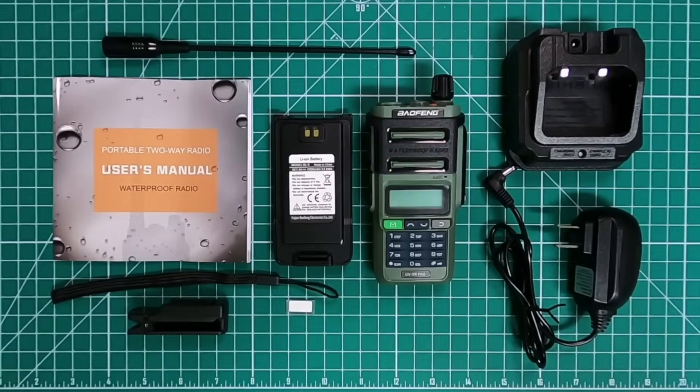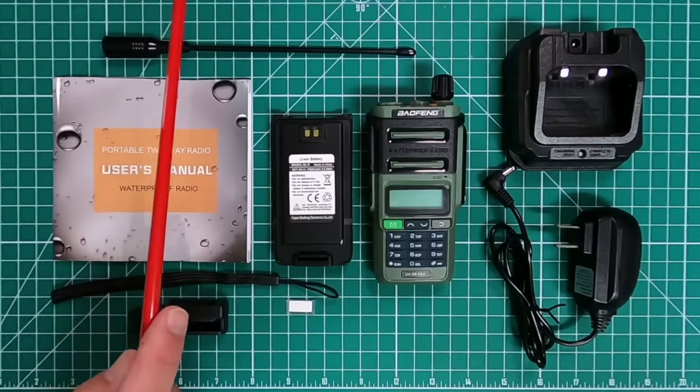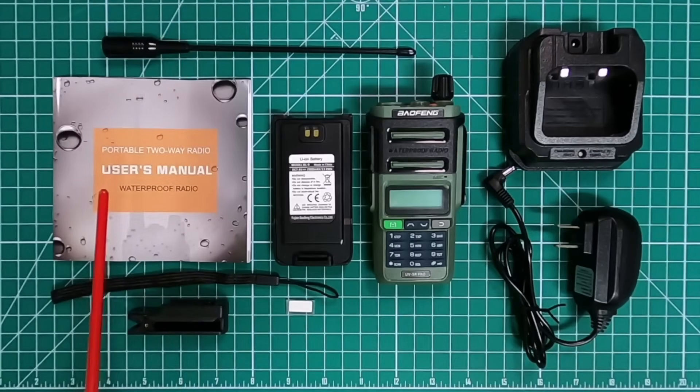Okay, the items come with it, pretty standard for any Baofeng. You get a charging cradle, the wall wart for the cradle, 2-meter 440 antenna, owner's manual, wrist strap, and belt clip.